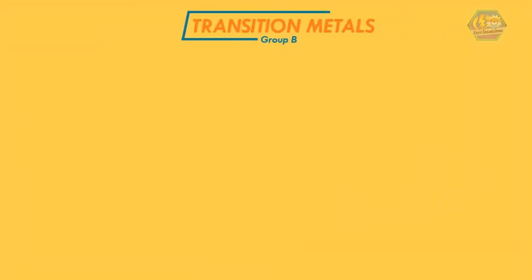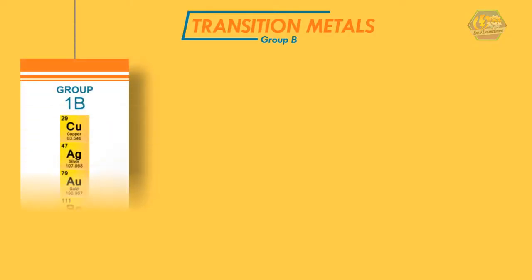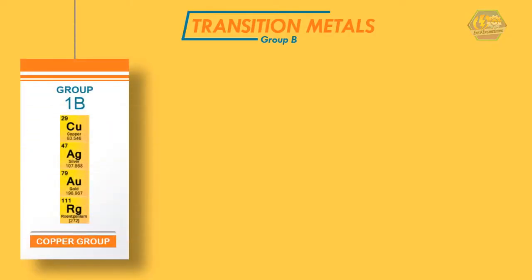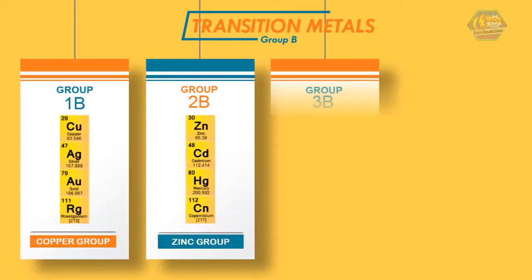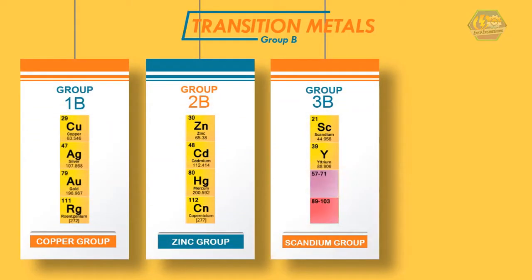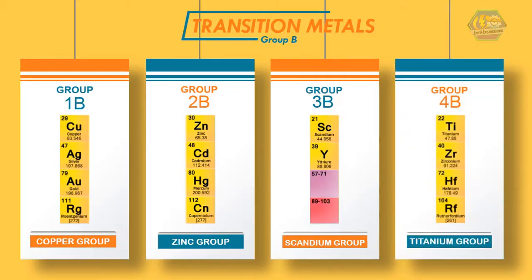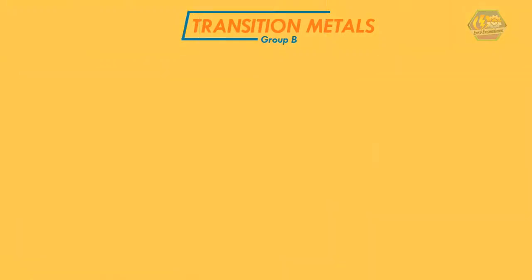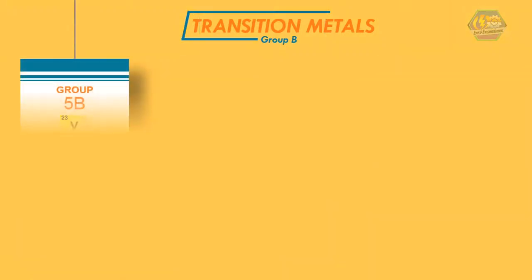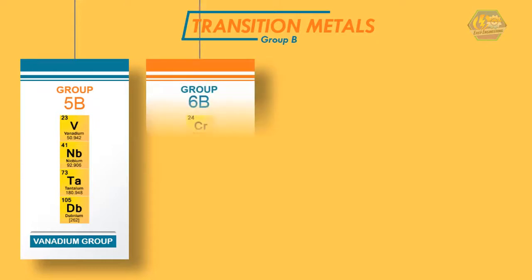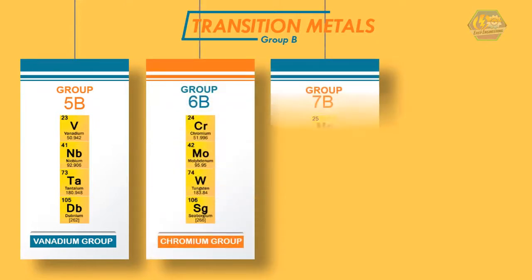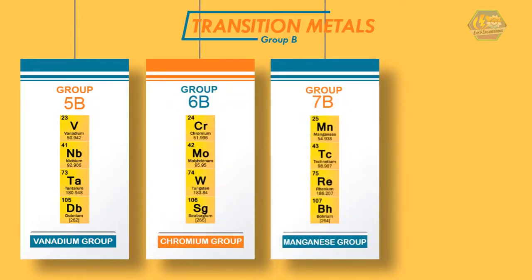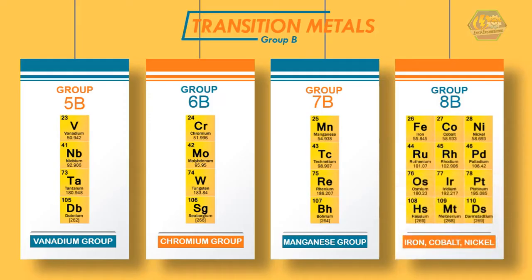For Groups B, they are called transition metals. From Group 1B: copper group; Group 2B: zinc group; Group 3B: scandium group; Group 4B: titanium group; Group 5B: vanadium group; Group 6B: chromium group; Group 7B: manganese group; and Group 8B is composed of the iron group, cobalt group, and nickel group.